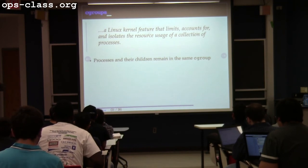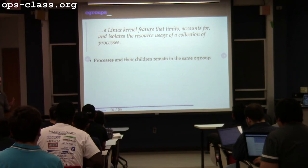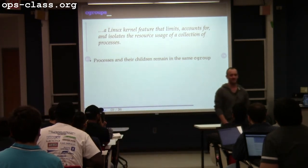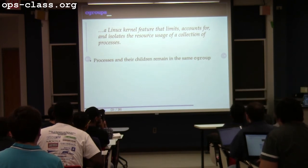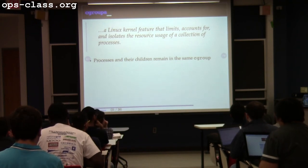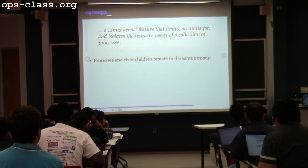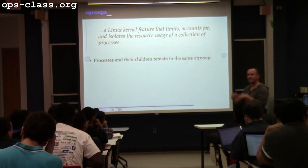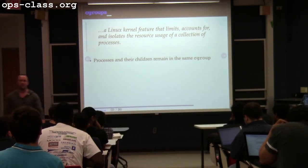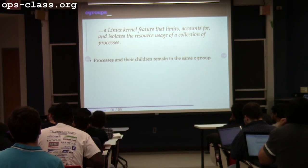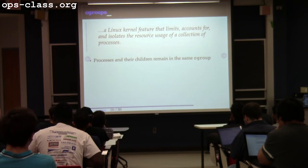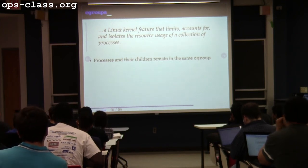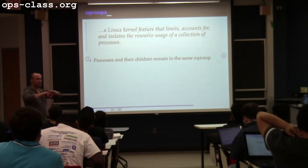Process children also remain in the same cgroup, which is important from a resource management perspective. With old process management tools, services could get away by double-forking — fork, fork again, the middle process dies, the new process is now parented to init as an orphan, detached from the process tree. In cgroups, if you fork and fork again, you're still inside the same cgroup, so resource limits still apply. This is also useful for web servers — if NGINX decides it wants to start 82 workers, all of those can still be controlled inside the same group.